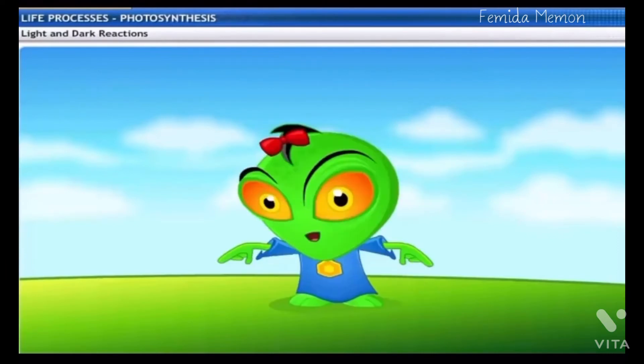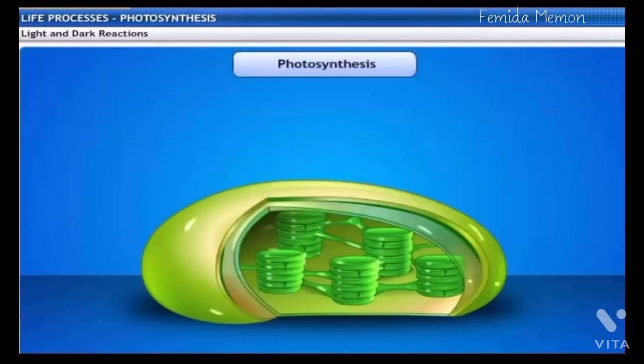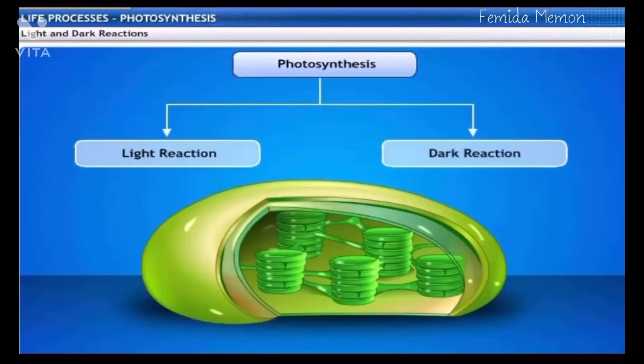Interesting! And how does the process of photosynthesis take place? Photosynthesis involves a series of photochemical reactions that consist of two phases: light and dark reaction.